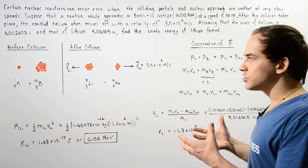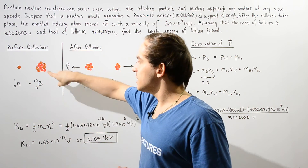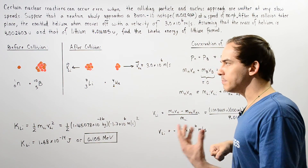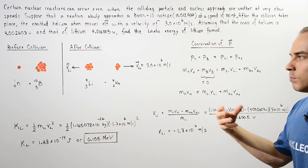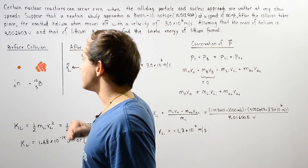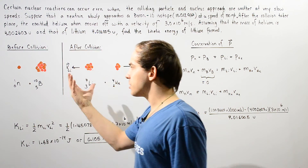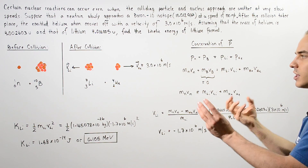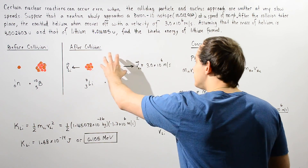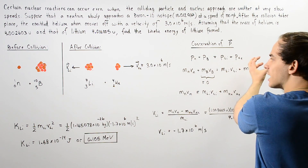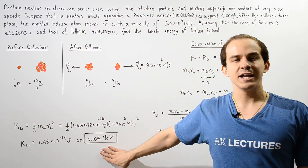This nuclear reaction takes place because the neutron is able to approach and collide with the nucleus of the boron atom since it has no net charge, meaning it won't feel the repulsive forces of the protons and electrons. Even though the neutron approaches with a very low velocity, the collision and nuclear reaction still takes place, and the helium moves away with a certain kinetic energy while the lithium moves away with approximately 0.105 mega electron volts of kinetic energy.